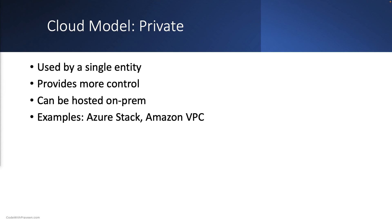A single entity uses a private cloud and provides more control over data and resources. It can be hosted on premises or on a dedicated infrastructure. Examples of private cloud platforms are Azure Stack and Amazon VPC. However, the high cost of setting up and maintaining a private cloud infrastructure can be a significant disadvantage.